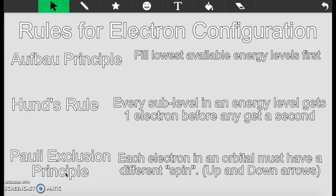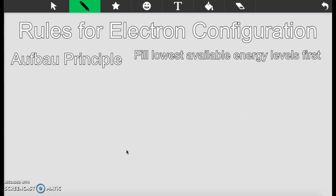Pauli Exclusion Principle, long name, pretty simple idea. Each electron in an orbital must have a different spin. That's the one thing we did with the up and down arrows, the picture demonstrations.